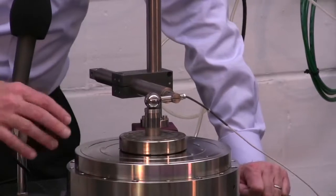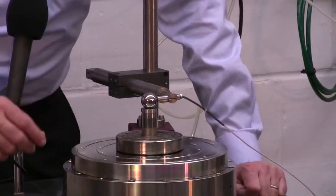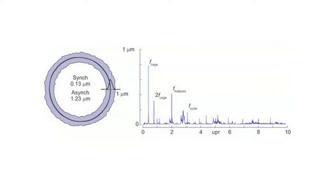What we find when we measure an air bearing spindle is that there's very low synchronous error motion and also very low asynchronous error motion.